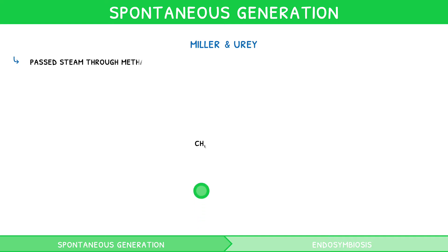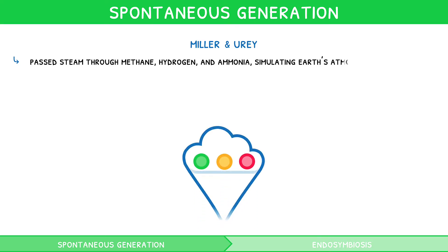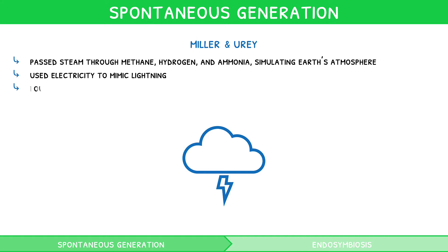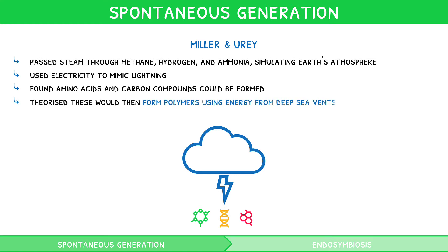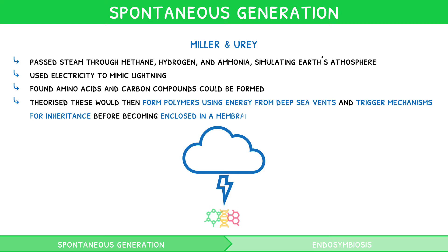Miller and Urey passed steam through methane, hydrogen, and ammonia to mimic Earth's early atmosphere. Then, using electricity to mimic lightning, they found that amino acids and carbon compounds could be formed. They theorised these would then form polymers using energy from deep-sea vents and trigger mechanisms for inheritance, before becoming enclosed in a membrane to form a cell.